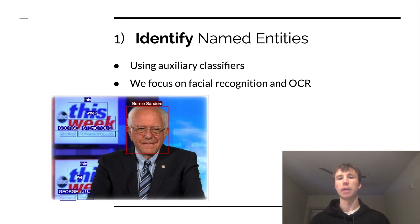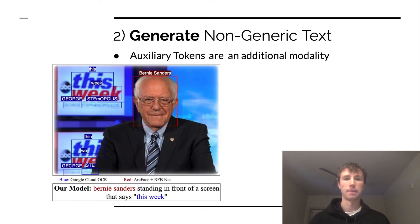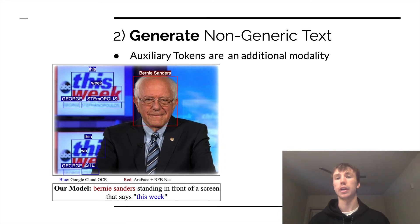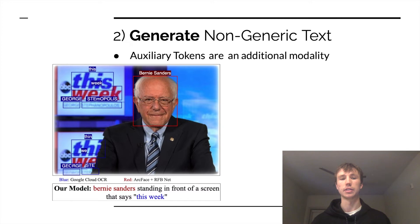First, to identify named entities, we use auxiliary classifiers. Specifically, we focus on facial recognition and OCR, as can be seen in this image. Next, to generate non-generic text, we use auxiliary tokens as an additional modality, which are passed to the caption generating model. This allows our model to generate captions such as 'Bernie Sanders standing in front of a screen that says this week.'